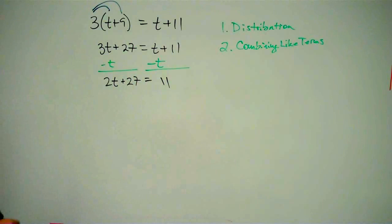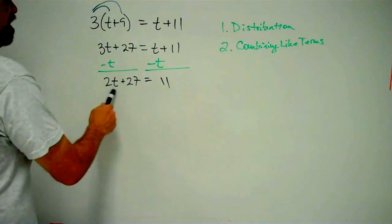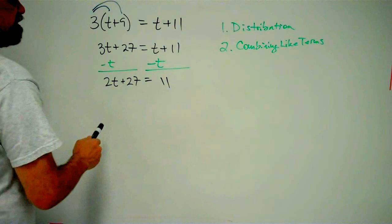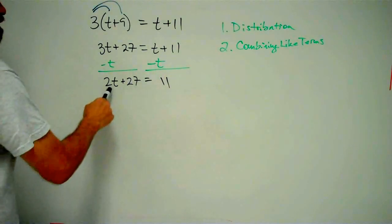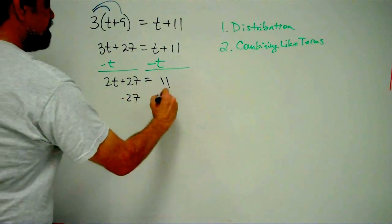Two-step equation. We know how to do these. What's happening to t? It's being multiplied by 2, then adding 27. So how do we solve this? We subtract 27, then we divide by 2. Let's start by subtracting 27.